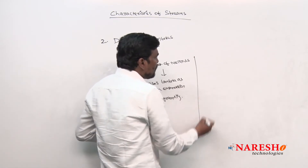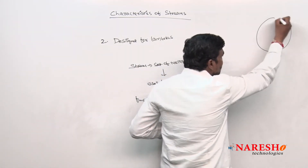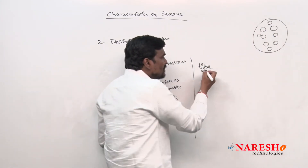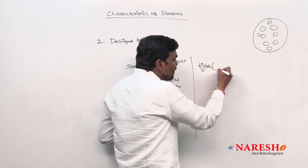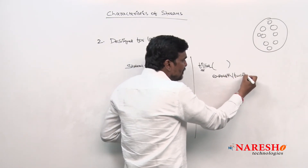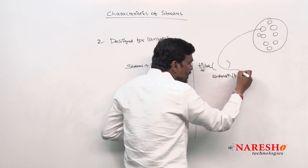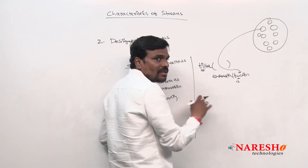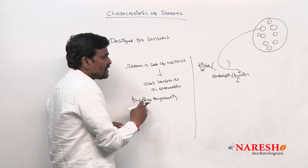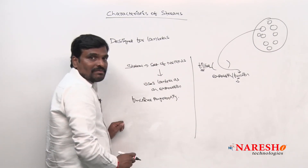For example, a stream provides one method called filter. Assume this is a collection having a number of integer objects, and I want to filter even numbers. The filter method requires one expression — one function — where it reads each element and applies this function, which determines whether that number is even or odd. This means the methods provided by stream are functional by nature; they take a lambda as an expression.